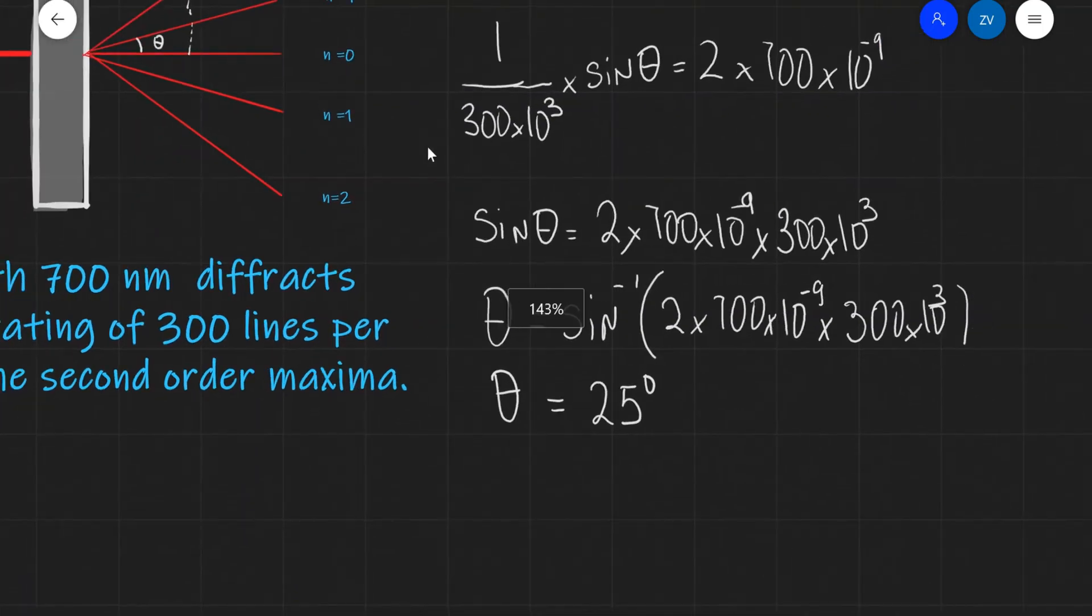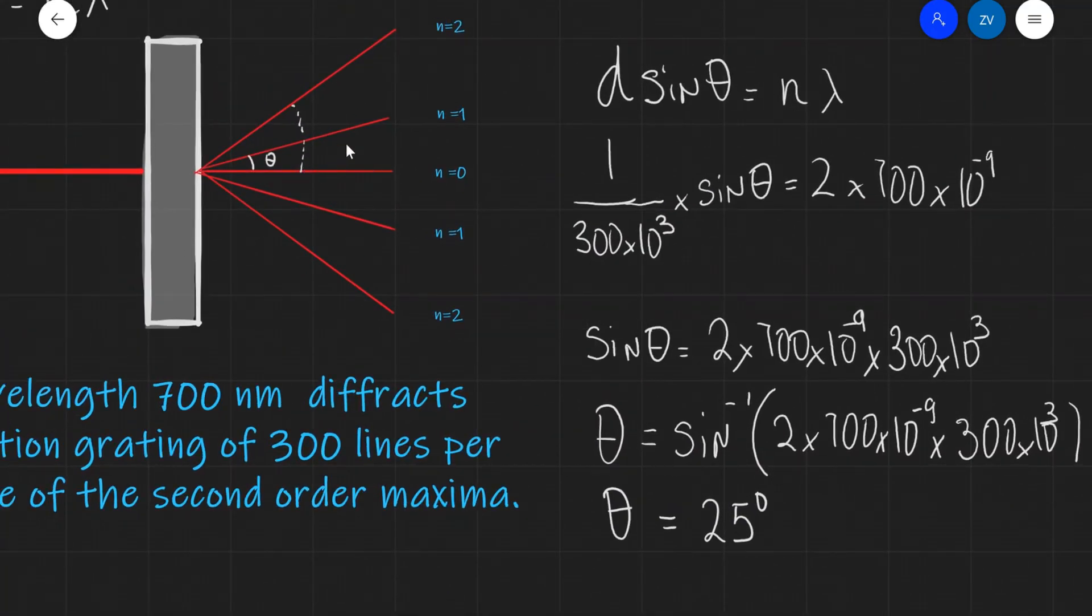This means the angle between n=0 and n=2 is 25 degrees. We can rearrange this equation for any unknown, just like any other equation. Hopefully diffraction gratings make sense now. If you have questions, please drop a comment. Thank you for watching!